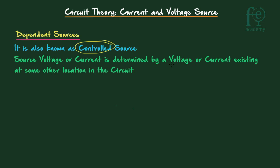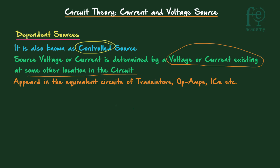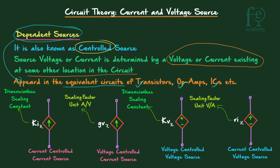The source voltage or current in a dependent source is determined by a voltage or current existing at some other location in the circuit. This is mainly seen in the equivalent circuit of transistors. We use dependent sources mainly to represent equivalent circuits of transistors, op-amps, and ICs — for modeling of active elements. A diamond symbol is used to represent dependent sources, unlike the circle used for independent sources.